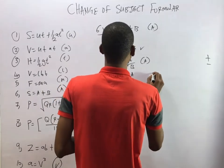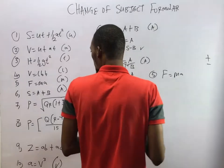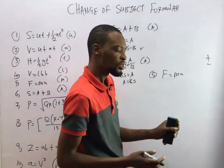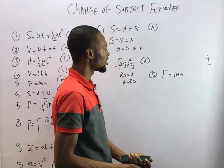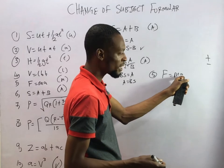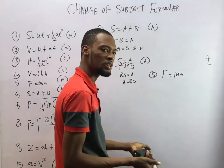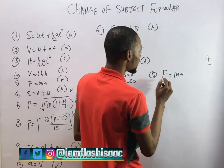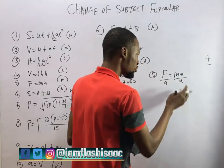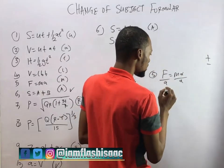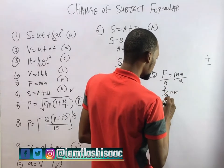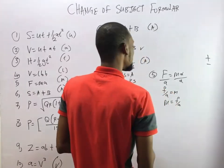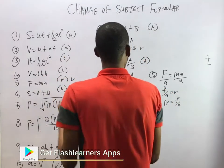Question 5 says F equals MA and we need to make M the subject formula. M and A are joined by multiplication, so we divide both sides by A. A divided by A equals 1, and M times 1 equals M. So F over A equals M, rearranging to M equals F over A. We've made M the subject formula.